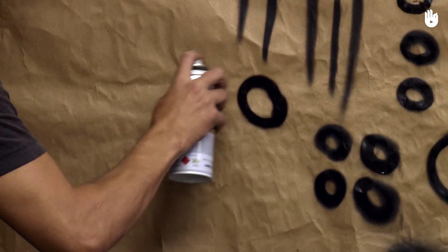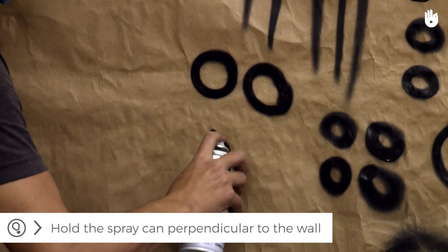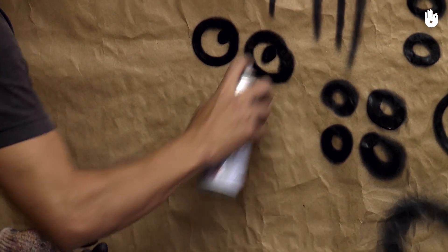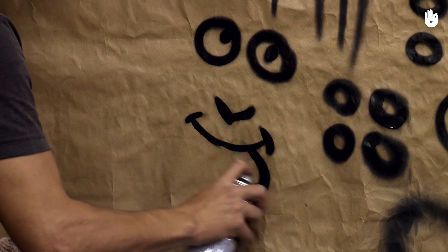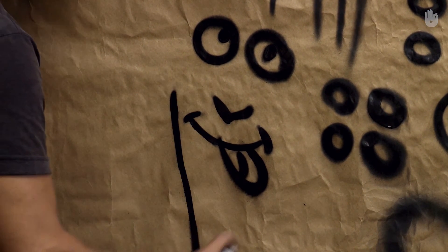Second tip: to better control the shape of your lines, try positioning the nozzle perpendicular to the wall.